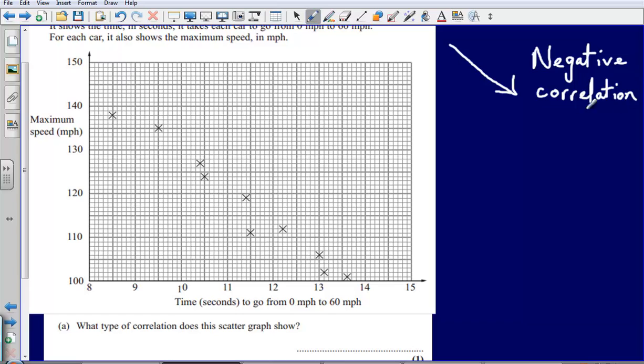Then if, for example, you had points on your graph that were going in an upwards direction like this, we would say that that is a positive correlation. If we are going upwards, if we are up, we are positive; if we are down, we are negative.